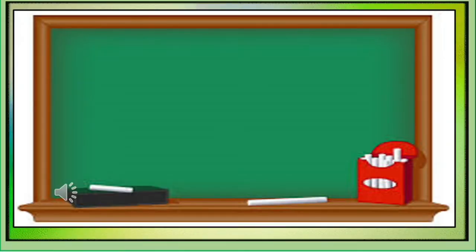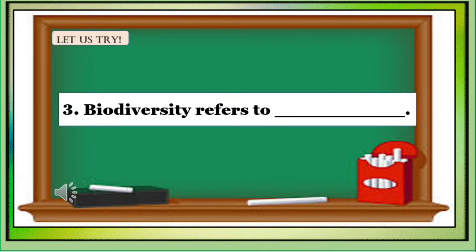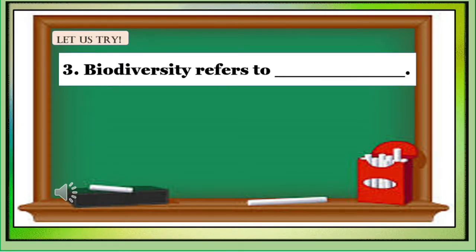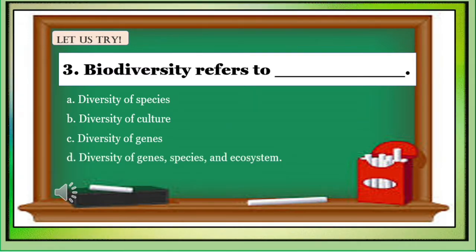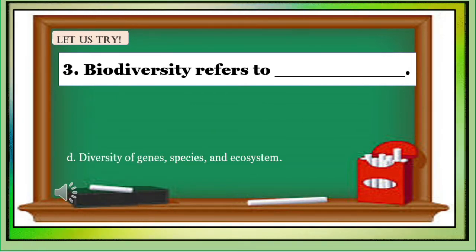Number 3: Biodiversity refers to blank. Letter A: Diversity of species. Letter B: Diversity of culture. Letter C: Diversity of genes. Letter D: Diversity of genes, species, and ecosystem. The correct answer is Letter D — diversity of genes, species, and ecosystem.